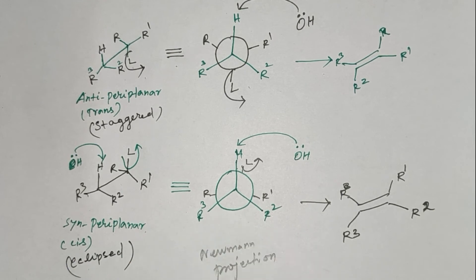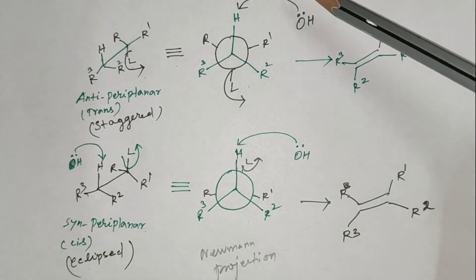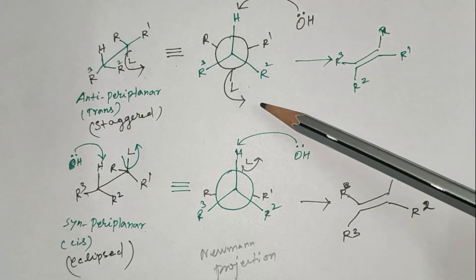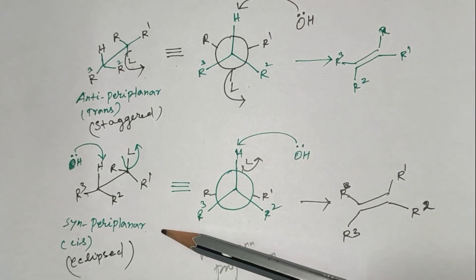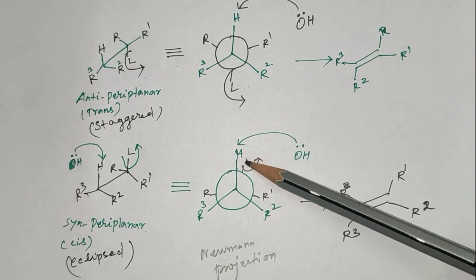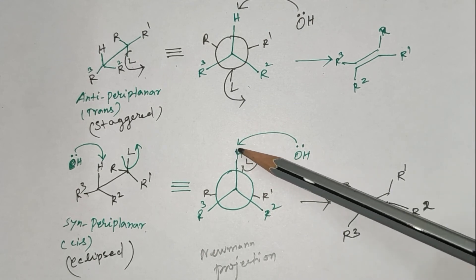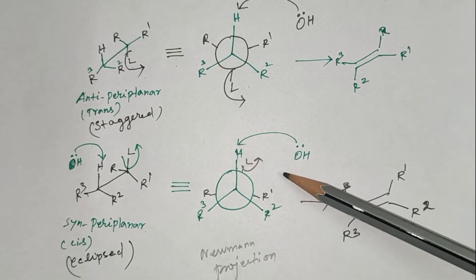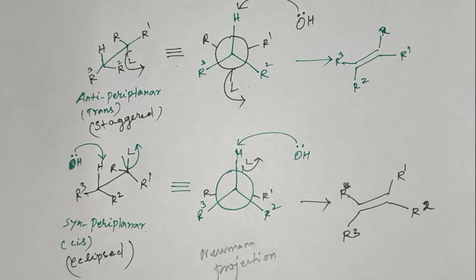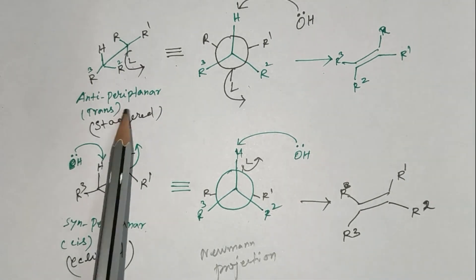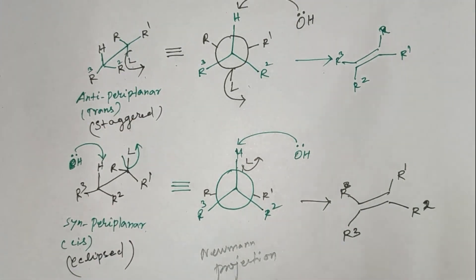The elimination will be more facile in trans position. In trans position, the attacking base approaches from the furthest side of the leaving group. But in cis position, the attacking base and the leaving group are in the same side, so it causes repulsion. The elimination occurs in staggered conformation that is lower energy than higher energy eclipsed conformation. So elimination will be faster at trans position than cis position.